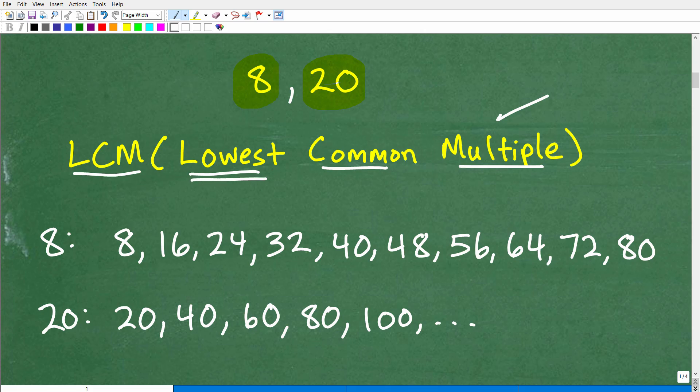To understand these words, the lowest - pretty much everyone understands what lowest is. And common means they are the same. We just need to understand this word, multiple. Let's take a look at eight, and then we'll look at 20. So let's look at multiples of eight. It means that eight is being multiplied by these nice natural counting numbers.